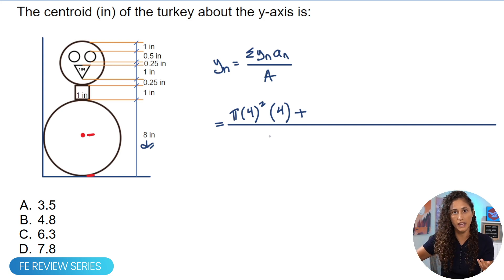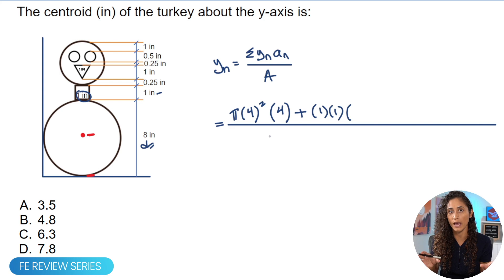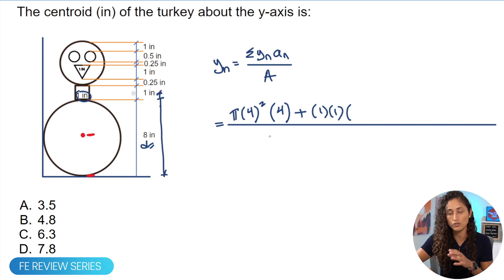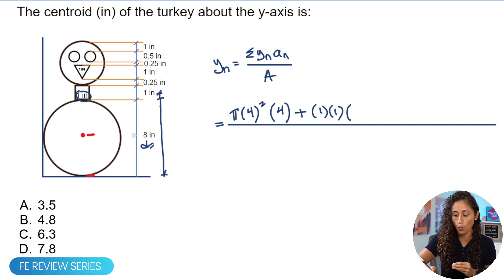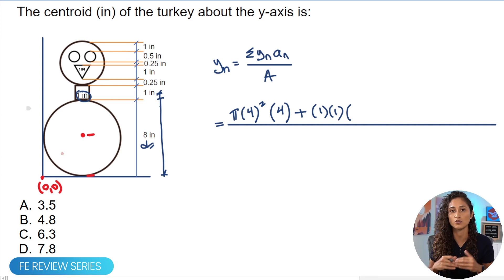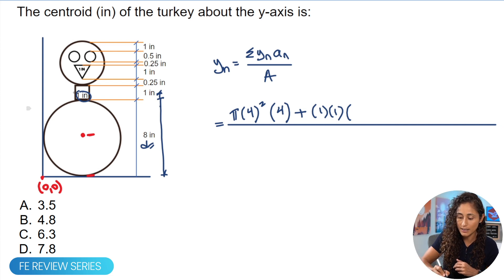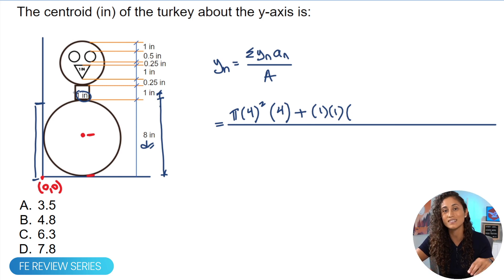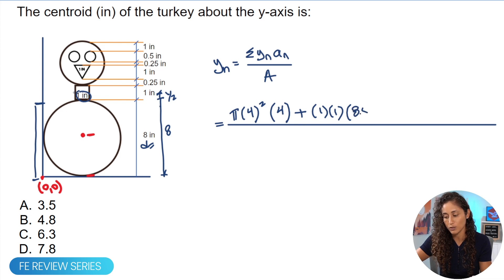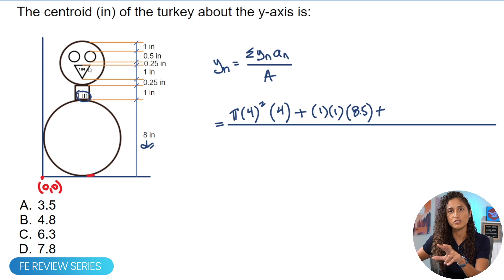Adding the rectangle: the area is b × h = 1 × 1. For ȳ_n of the rectangle, we need to reference it back to the origin. The rectangle is 8 inches away from the origin, so we take that distance and add half the rectangle height for the centroid location: 8 + 0.5 = 8.5. So we multiply the area (1 × 1) by 8.5.